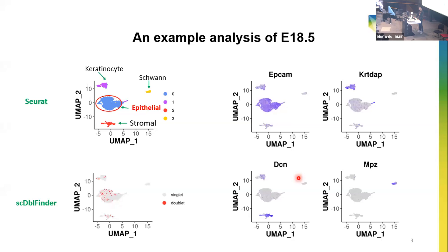Next, we analyzed each sample to obtain the epithelial cells using Seurat. For example, for the E18.5 sample, we identified the epithelial cell population as well as some contamination cells such as keratinocytes, Schwann cells, and stroma cells. The cell types were annotated using known marker genes.